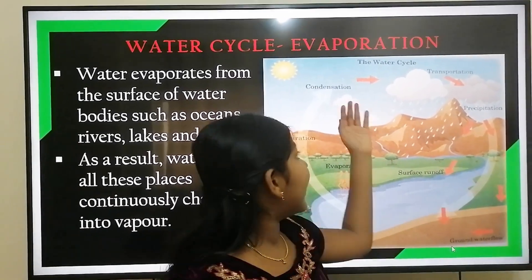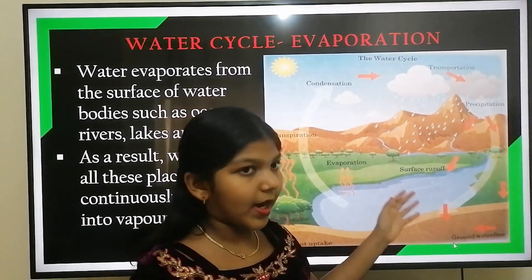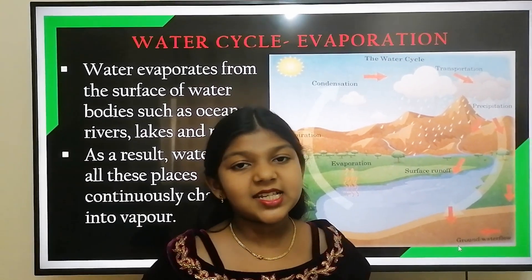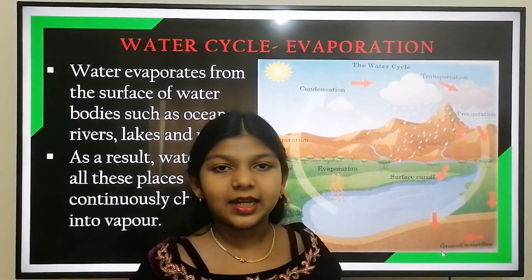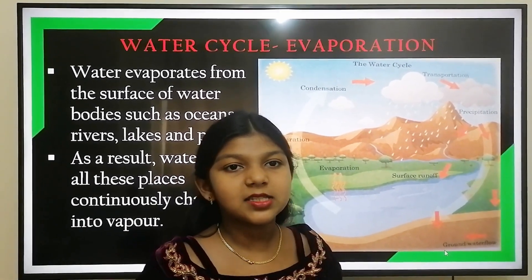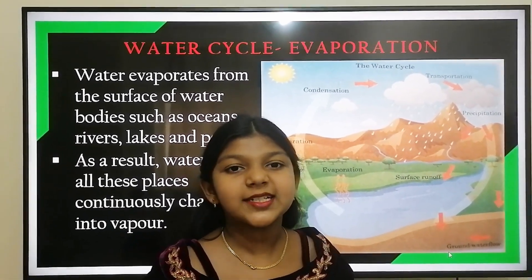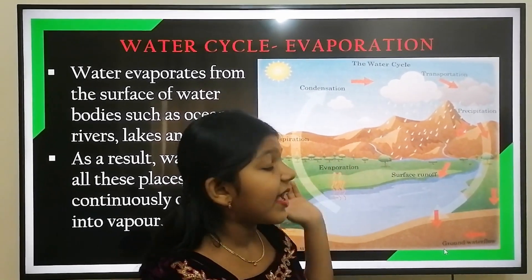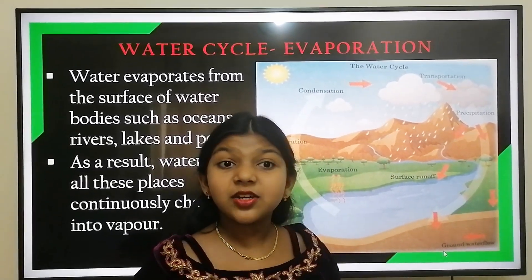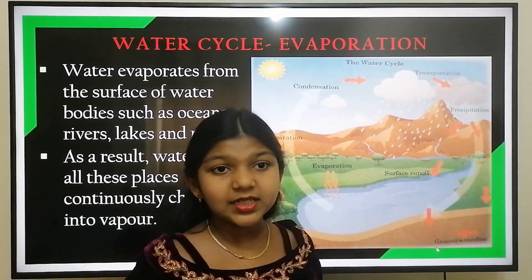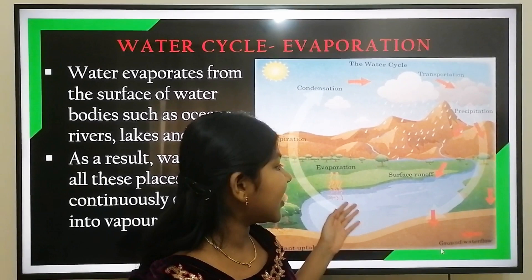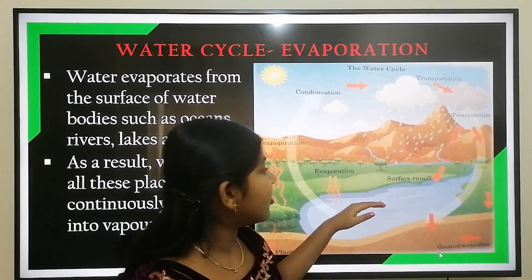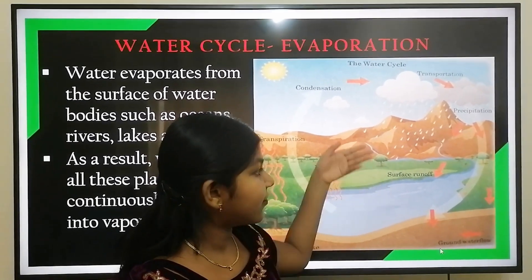Evaporation takes place when the sun heats up the water in water bodies such as the ocean, river, lake, streams, pond, etc., and turns them into water vapor. As a result of evaporation, the water in these water bodies continuously changes into water vapor.